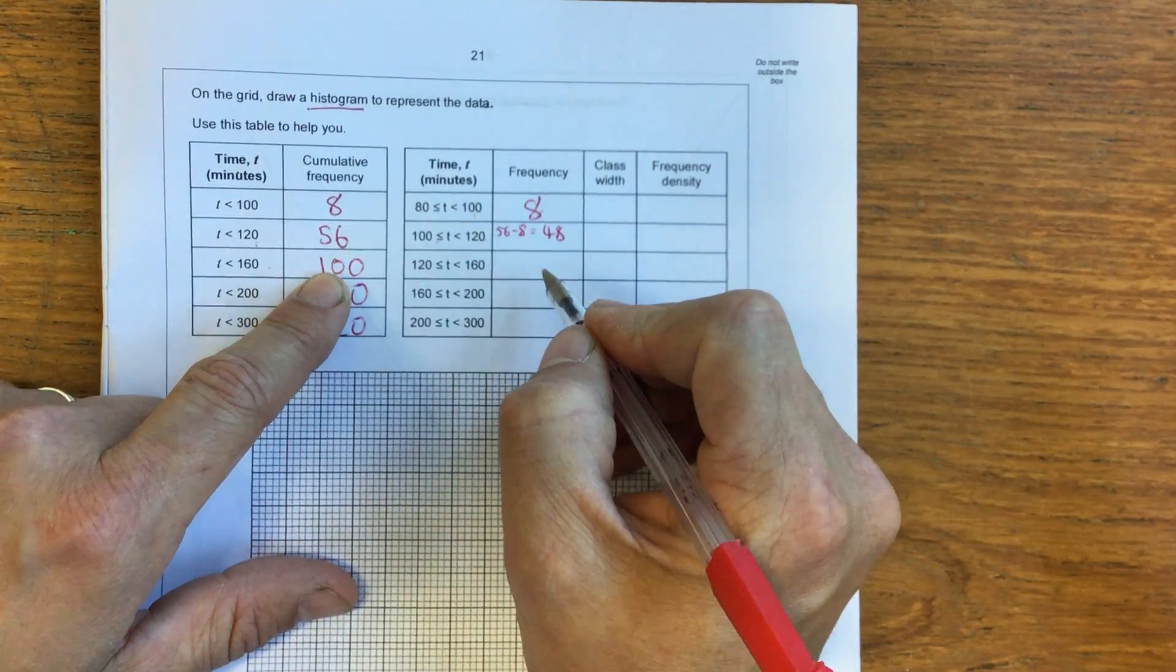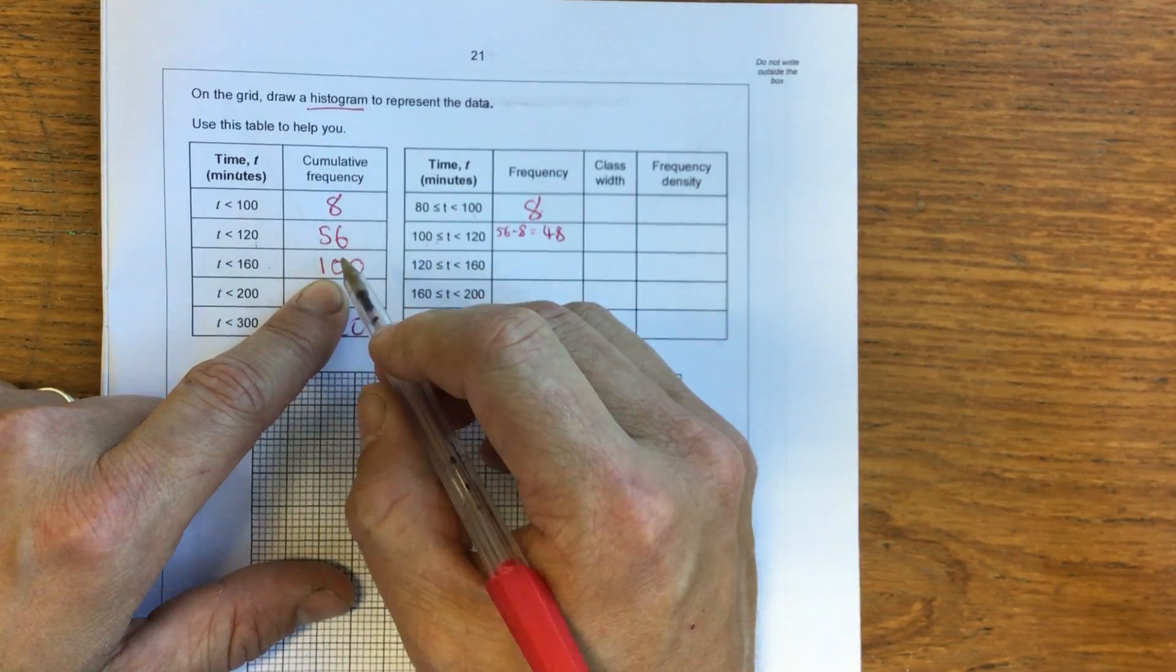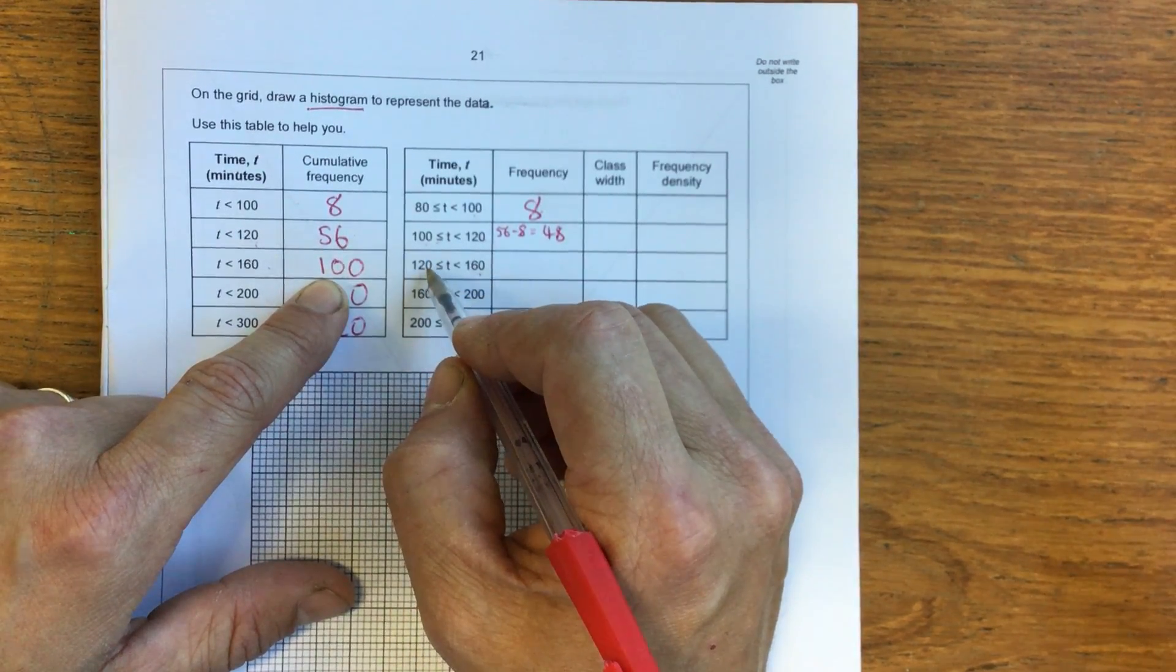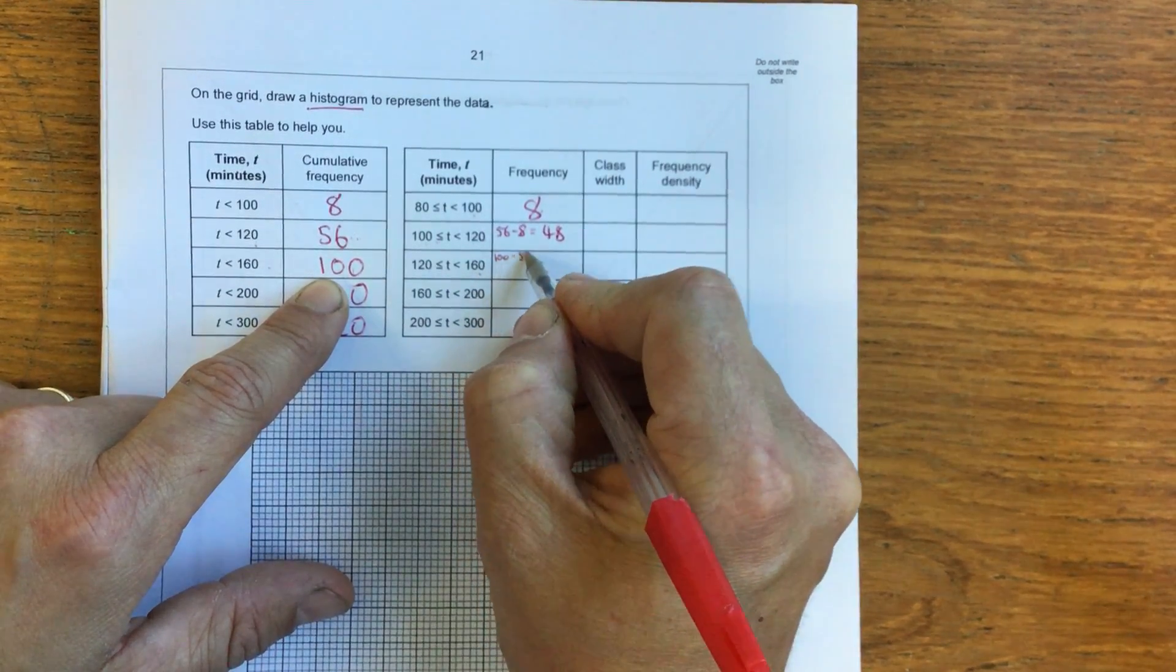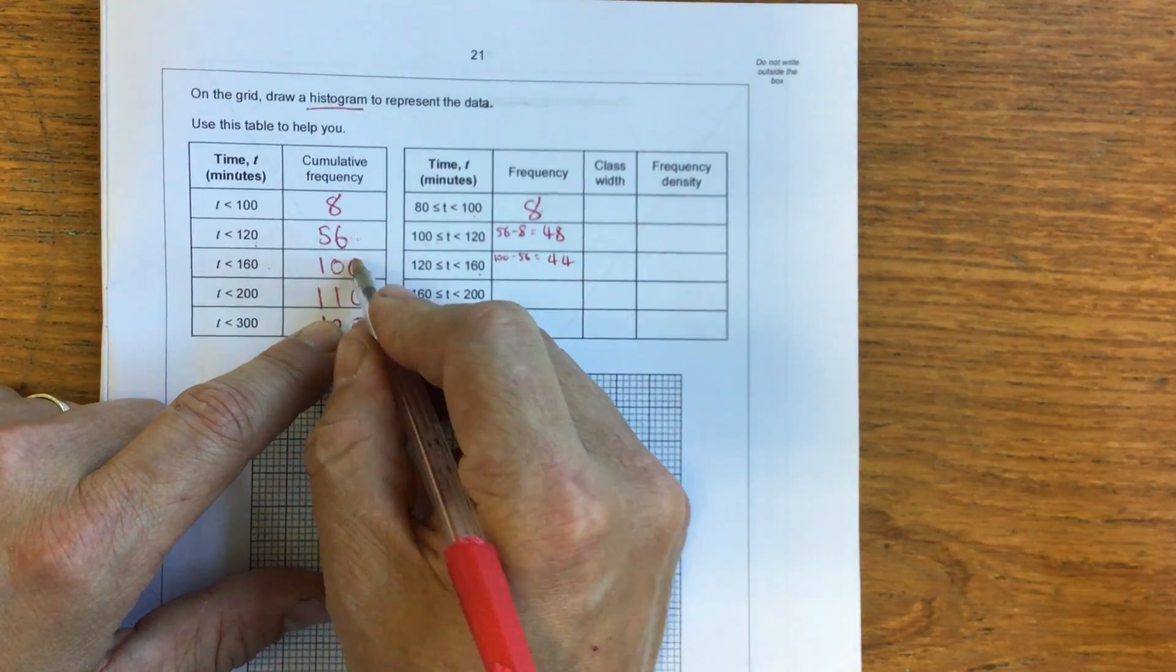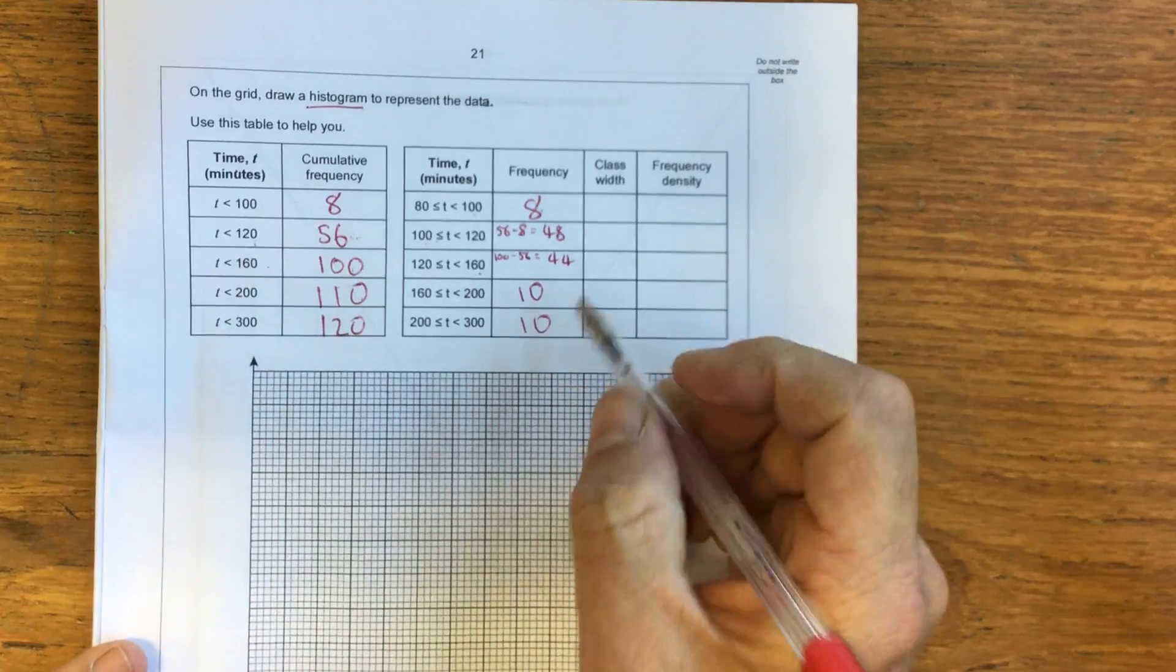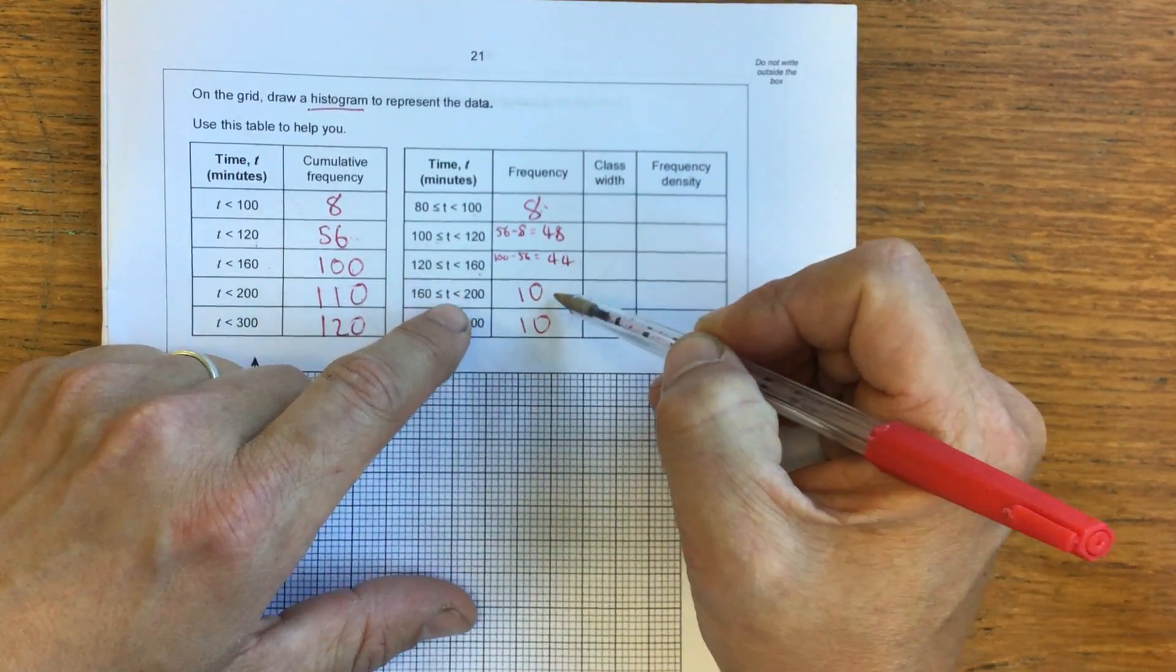And we follow that same idea across. Between 120 and 160 minutes, there was 100 people that got there before 160 minutes, but 56 people were there before 120. So the difference, 100 minus 56 equals 44. And then we just keep looking at the difference between these two numbers. So 110 minus 100 is 10. 120 minus 110 is 10. So this is how many people came in for each of these class widths.